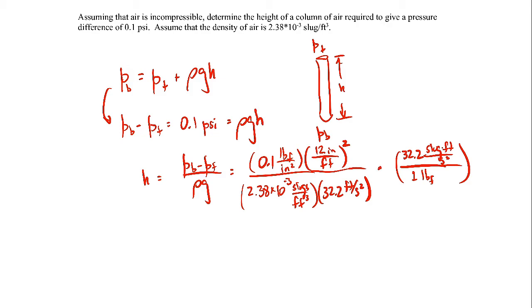If we plug in all those numbers and work it all out, the height will end up being 188 feet. So in order to get this small pressure difference of 0.1 psi, we need to go 188 feet from top to bottom to get that kind of pressure difference.